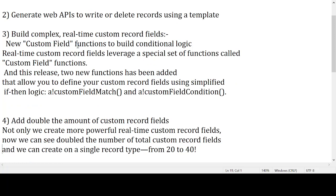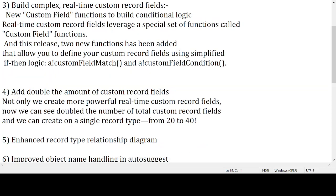For the third feature, real-time custom record fields leverage a special set of functions called custom field functions. In this release, two new functions have been added that allow you to define your custom record field using simplified if-then logic. The two new functions are: appian_custom_field_match and appian_custom_field_condition.